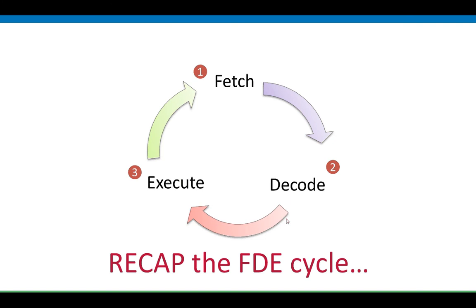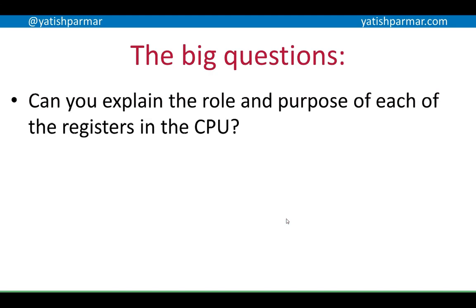What you need to do now is go and look at the fetch, decode, execute cycle and compare it to the more in-depth knowledge you now have of how the CPU works and assembler. That will increase your understanding of what's going on during the fetch, decode, execute cycle. You should now be able to explain in detail the role and purpose of each of the registers in the CPU. Watch out for the final video in this series explaining different addressing modes in the process of executing instructions.